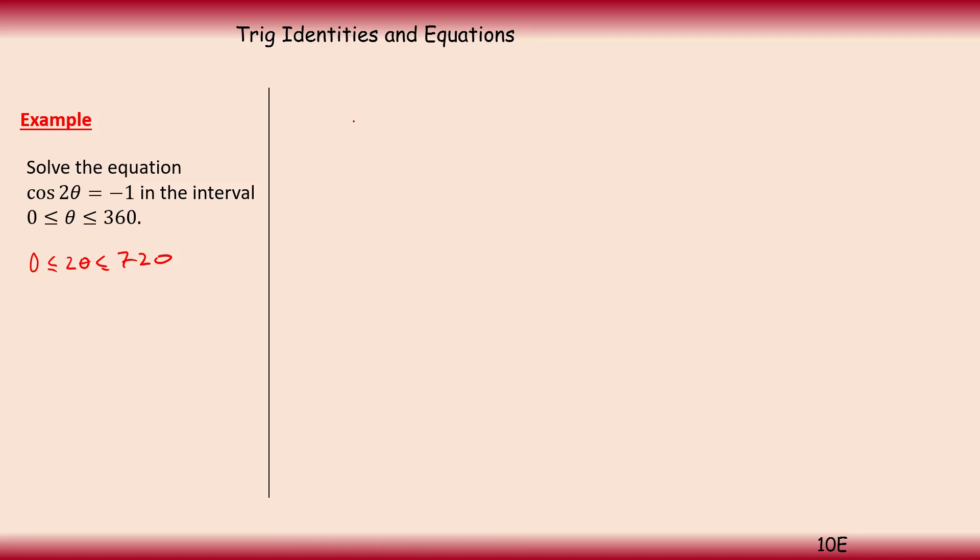So let's solve that first. Cos of 2θ is equal to minus 1, which means that 2θ is equal to cos to the minus 1, inverse cos of minus 1. And we plug it into our calculator, and it gives us 180 degrees.